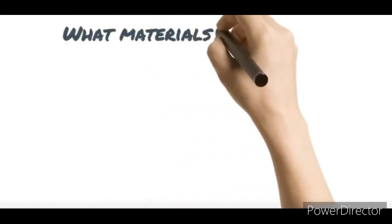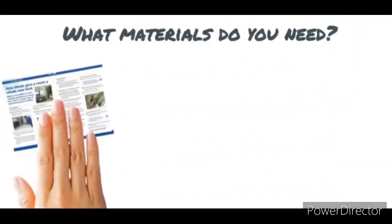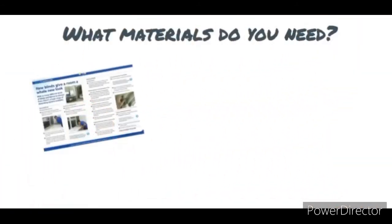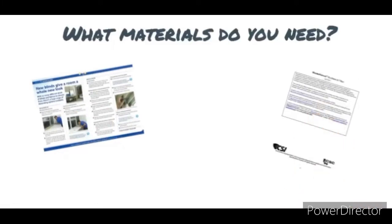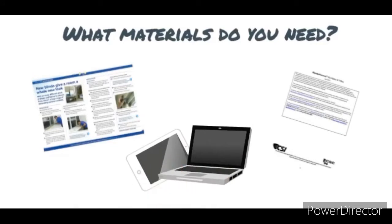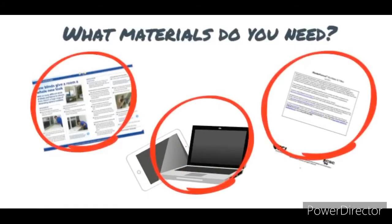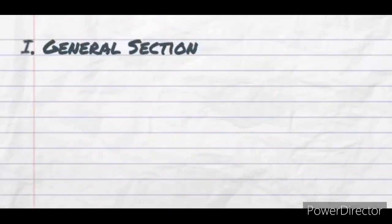So what materials do you need to complete your technical specs paper? You will need brochures related to the product you're specifying, a copy of the master format, and a laptop or any device where you can input all the information found. Once you have all these things, you may now begin.